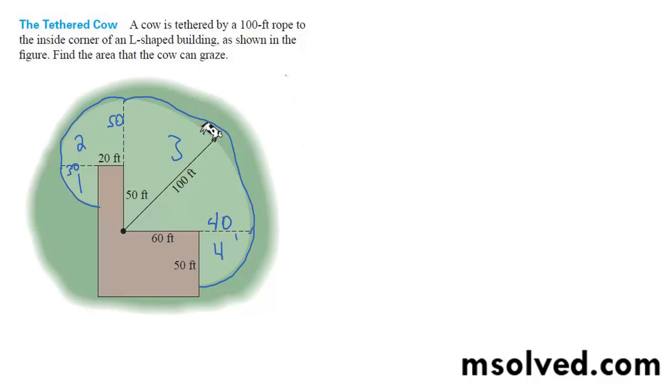Okay, starting off here, so we've got one half, 100 squared times, so that's 90 degrees, so 90 times pi over 180, which is pi over 2.